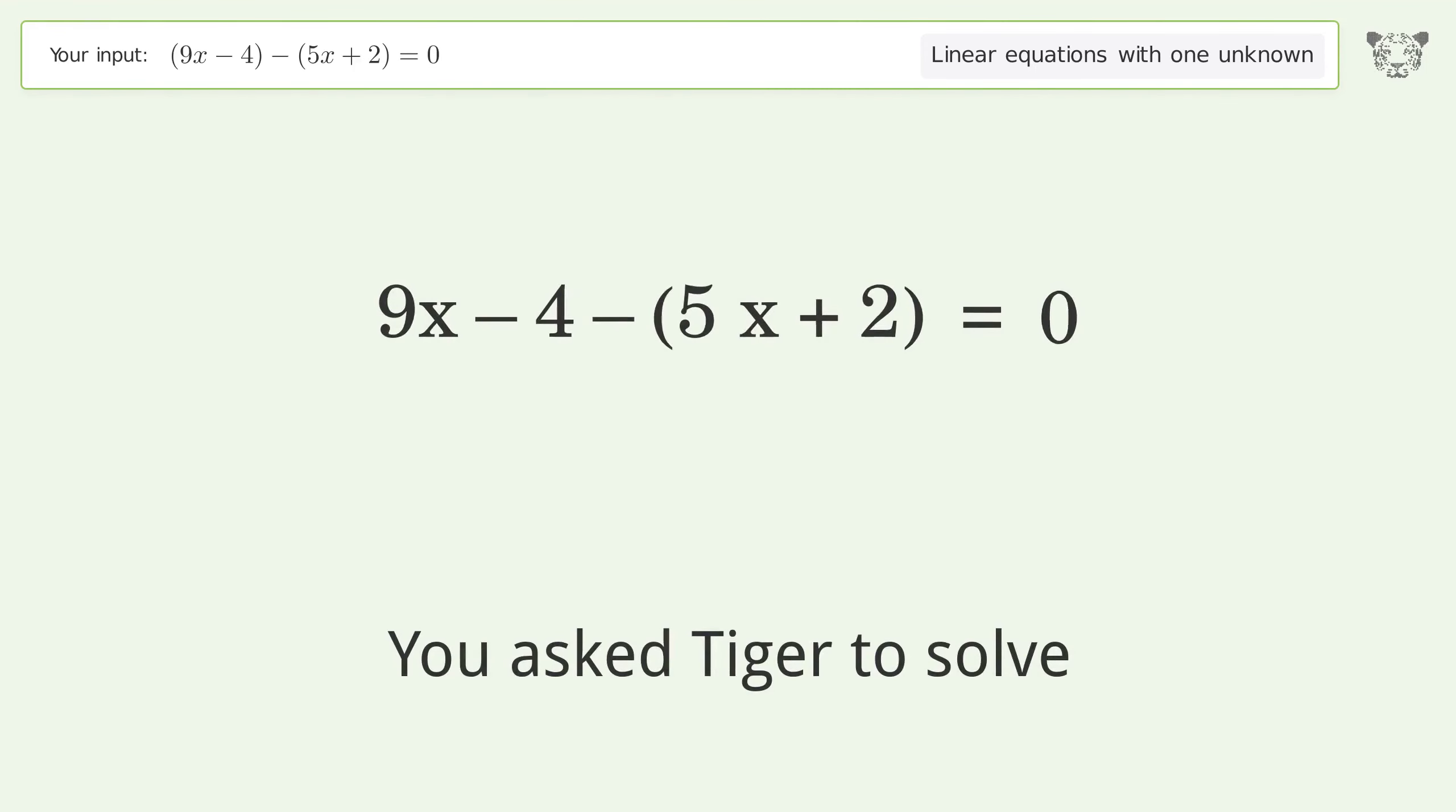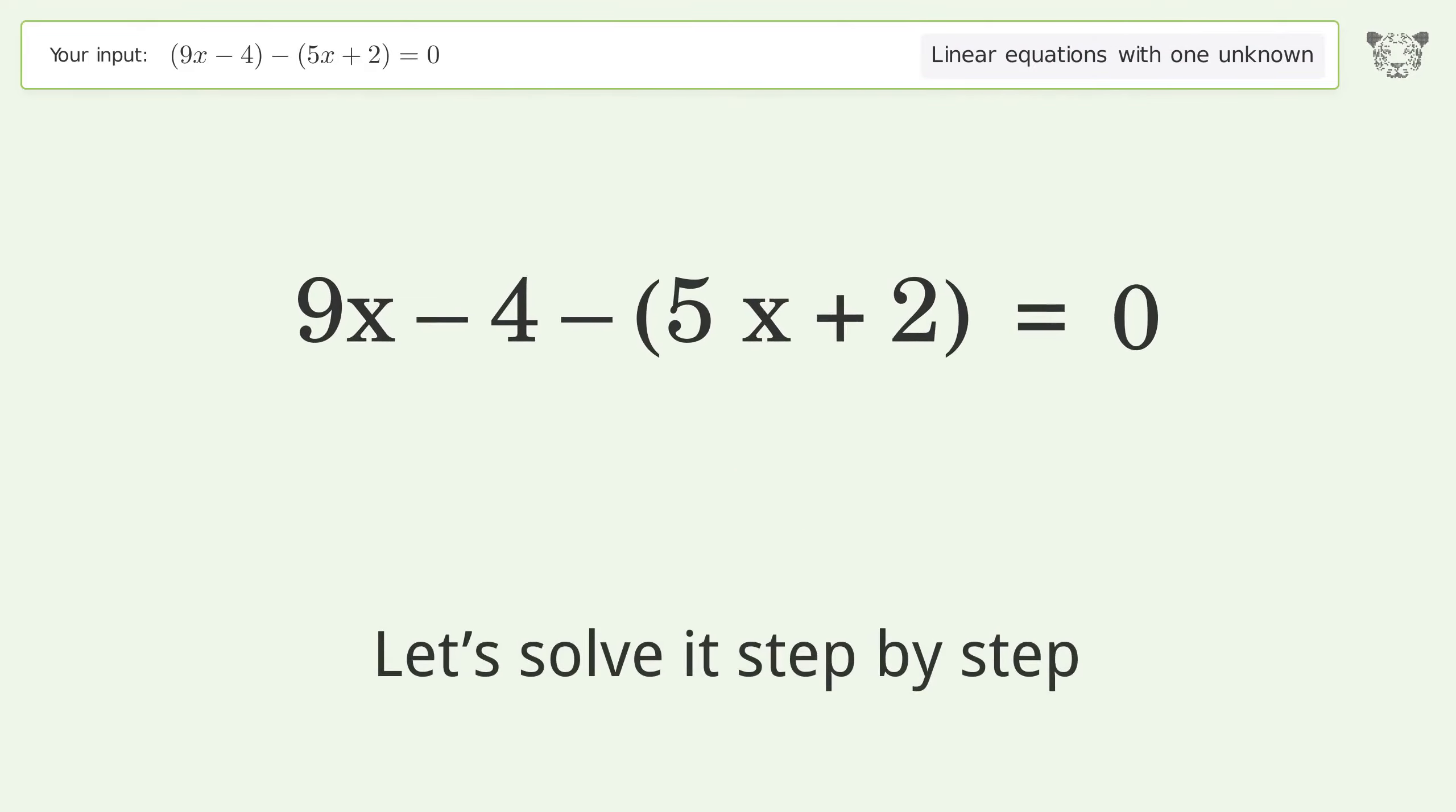You asked Tiger to solve this. This deals with linear equations with one unknown. The final result is x equals 3 over 2. Let's solve it step by step. Simplify the expression. Expand the parentheses.